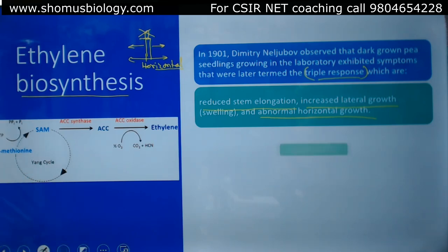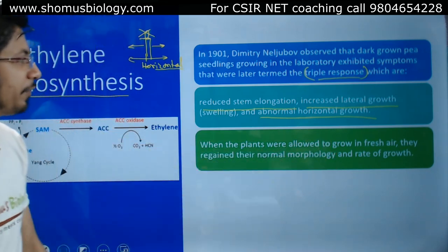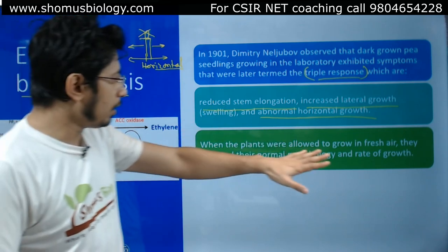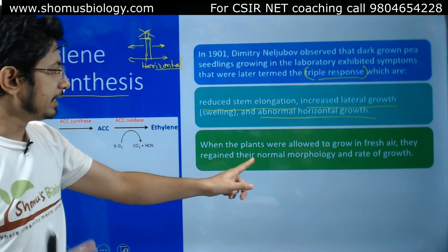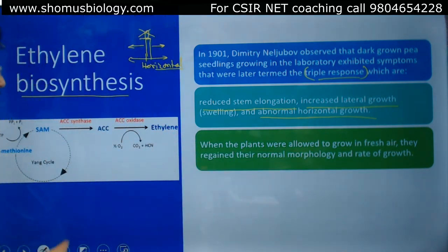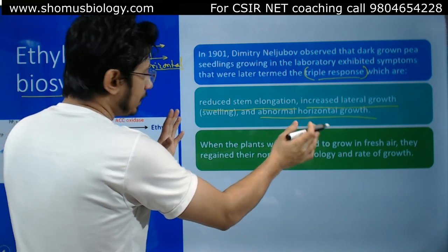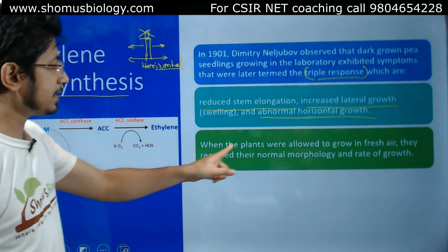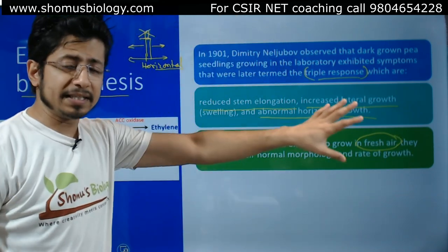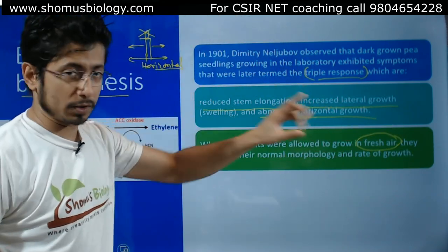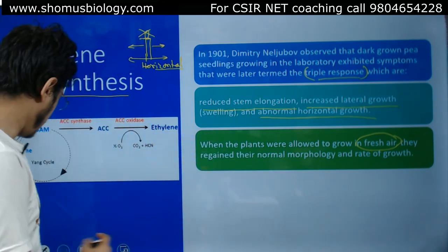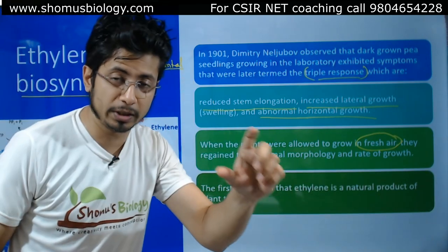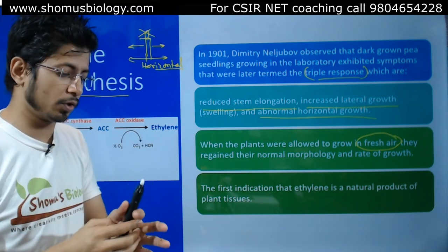When the plants were allowed to grow in fresh air, they regained their normal morphology and rate of growth. This indicated that something in the air was causing the triple response — causing growth in the horizontal plane. Now we know that it is due to the presence of ethylene, which is a gaseous hormone in plants — the only gaseous hormone found in plants.